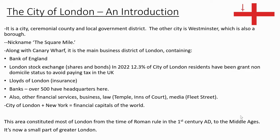The population of the city is about 8,000 people, so that's about 900-ish people with non-domicile status. Lloyds of London, which is a big insurance company, is in the city. Over 500 banks have their headquarters there, along with lots of other financial services businesses. Law is centred there around Temple and the Inns of Court, and of course the media along Fleet Street.